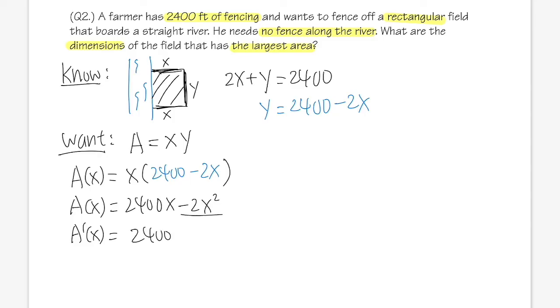And then this right here will give us minus 4x. And now here we go, set this to be zero, and you know, we will just get 2400 equals 4x. Of course, divide the four on both sides. x is equal to 600, and that's the critical number.